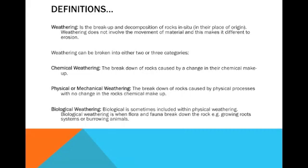Weathering can be broken into either two or three categories. Firstly, chemical weathering — this is the breakdown of rocks caused by a change in their chemical makeup. In physical weathering, sometimes called mechanical weathering, it's the breakdown of rocks caused by physical processes with no change in the rock's chemical makeup. And biological weathering is basically when flora and fauna — animals and plants — break down rocks, for instance, growing root systems inside rocks, or burrowing animals who burrow into the rocks.